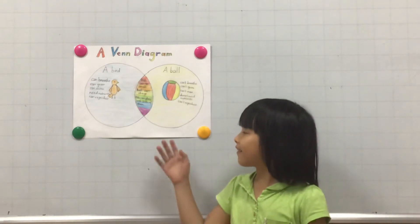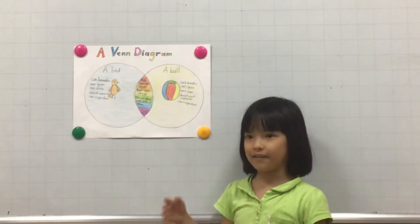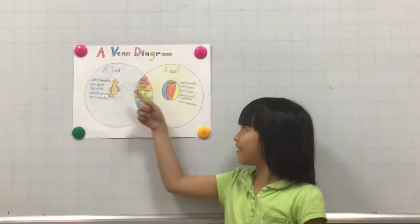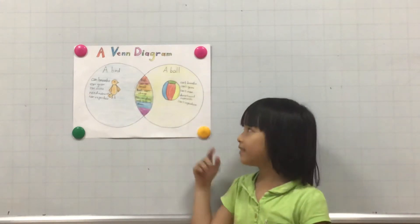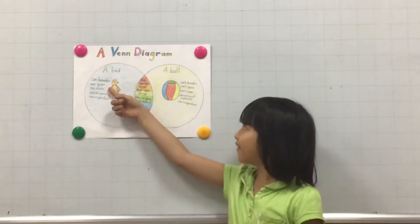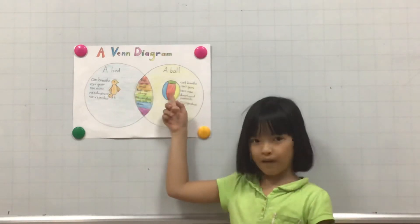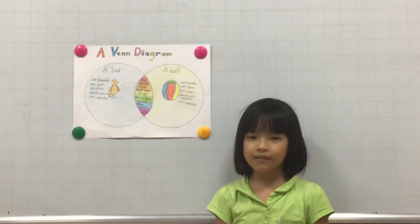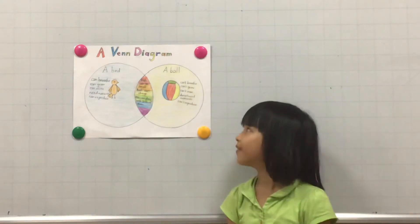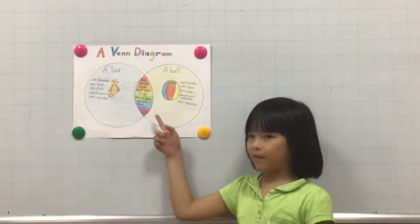The Venn diagram shows the difference and the similarities about a living and a non-living thing. The living thing is a bird and non-living thing is a ball. First I'm going to tell you about the differences between the bird and the ball.